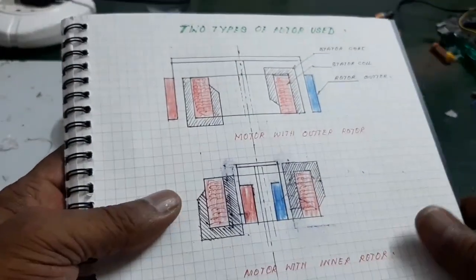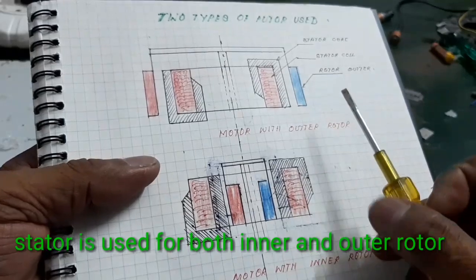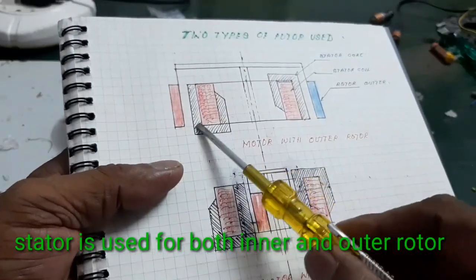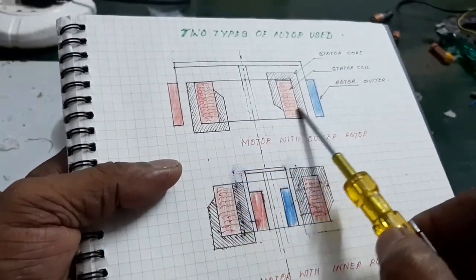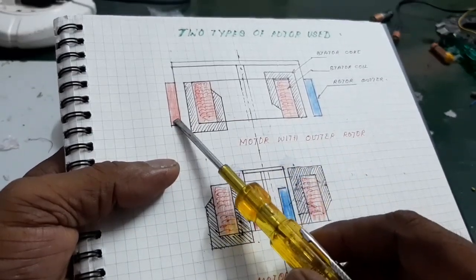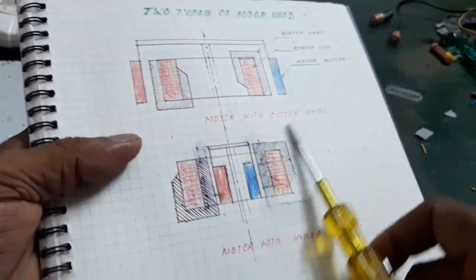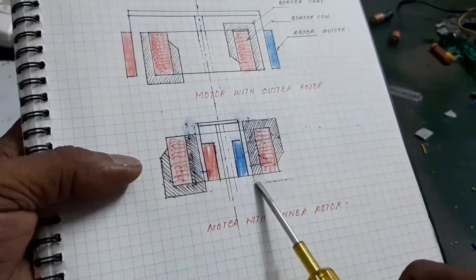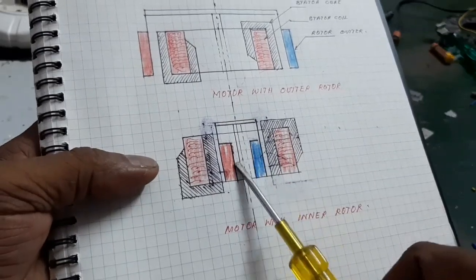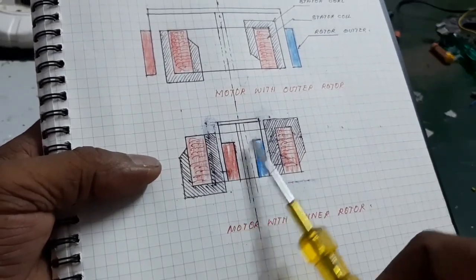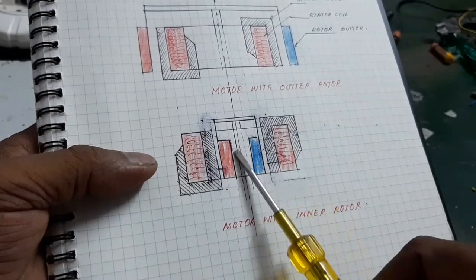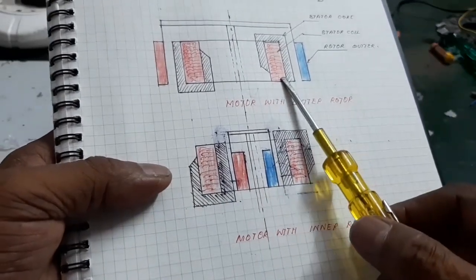Here, the stator is used for two types of rotor. When you insert the core like this, I'm using the outer rotor. When you insert the core like this, the inner rotor is used. So the stator is used for both inner and outer rotor.